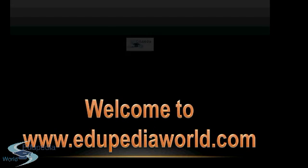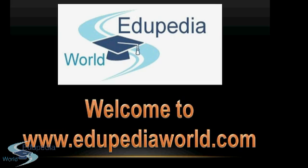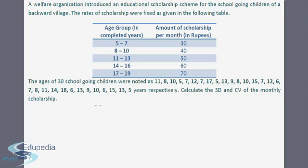Hello friends and welcome to edupedia world.com, your favorite portal for online education. In the last session of measures of dispersion, I had given you an assignment to solve and find the standard deviation using the shortcut method. The question is: a welfare organization introduced an educational scholarship scheme for school going children of a backward village. The rates of scholarship were fixed as given in the table. The ages of 30 school going children were noted, and you are asked to calculate the standard deviation and coefficient of variation of the monthly scholarship.